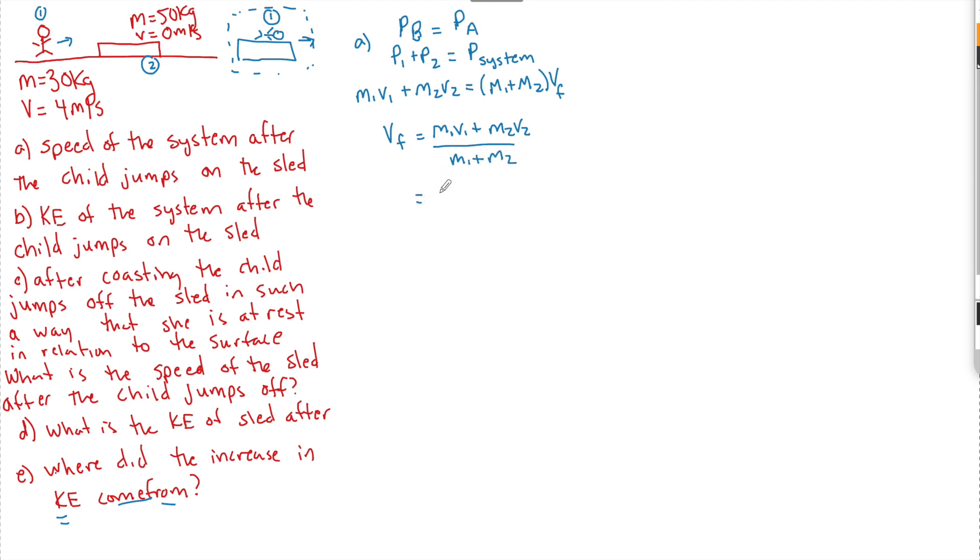So now what we have to do is substitute in 30 kilograms, that is the mass of the child, and it was moving at 4 meters per second plus zero because V is at rest. So if this is zero, then the momentum is also zero as well. Divided by 30 kilograms plus the 50 kilogram sled, that is going to give us a final speed of 1.5 meters per second.